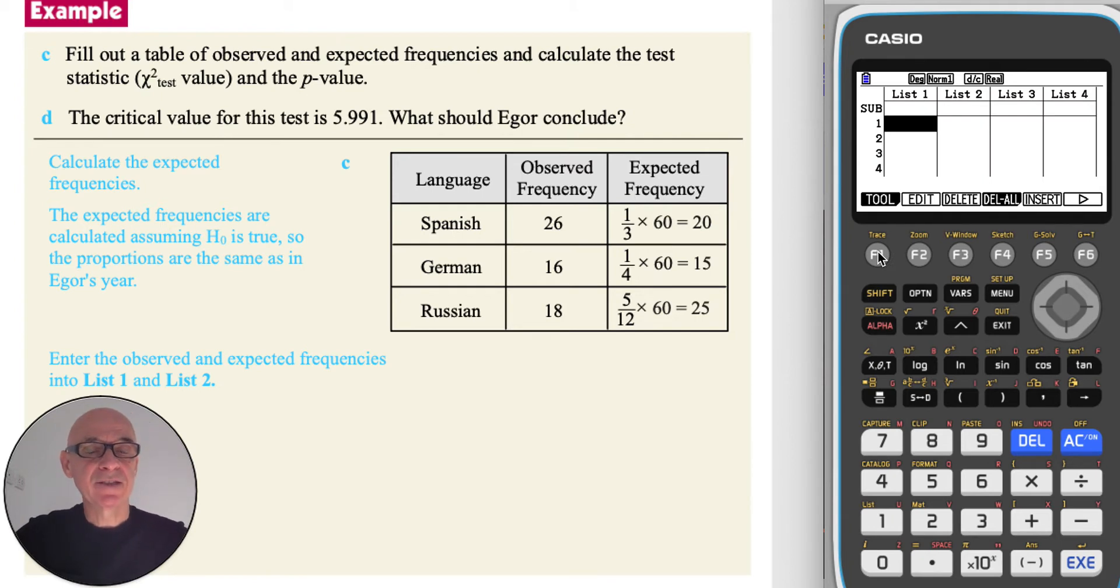So we're now ready to enter the observed frequencies into list 1: F6, 16, and 18. And the expected frequencies into list 2: 20, 15, and 25.